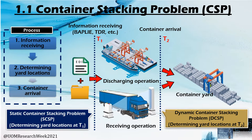In the static container stacking problem, the robust yard locations are determined by predicting the future condition of the yard prior to container arrival in the information receiving stage. But in dynamic container stacking, the yard locations are determined at the point of container arrival considering the real-time condition of the yard.